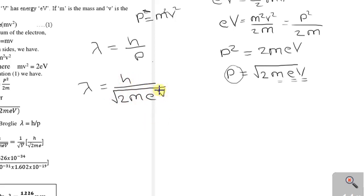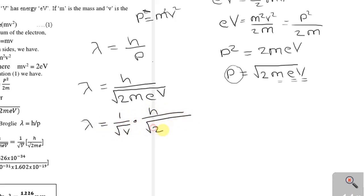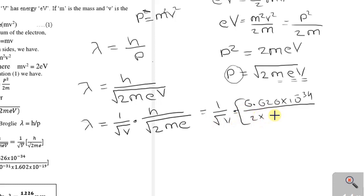The known quantities are Planck's constant, the mass of the electron, and the charge of the electron. The only unknown is the voltage V. We write lambda = (1/√V) × (h / √(2me)). Substituting values: h = 6.626 × 10⁻³⁴, mass of electron = 9.11 × 10⁻³¹, and charge of electron = 1.602 × 10⁻¹⁹.